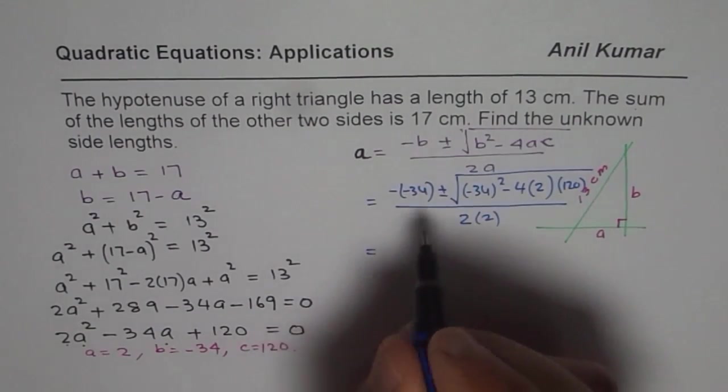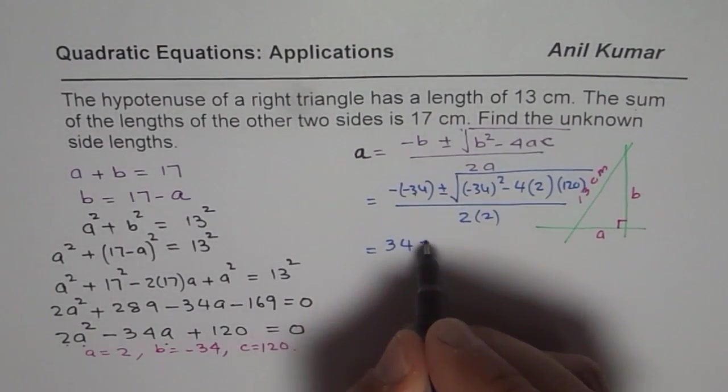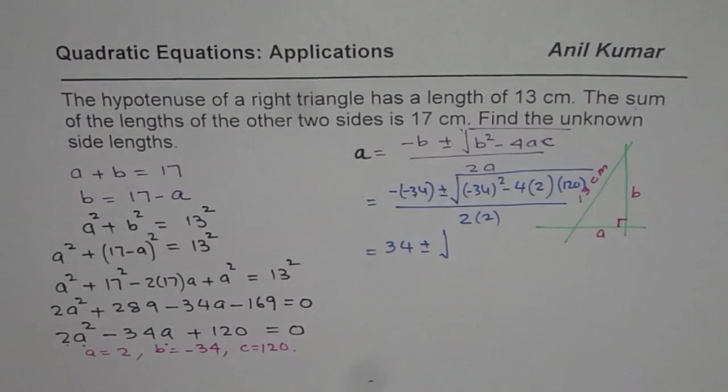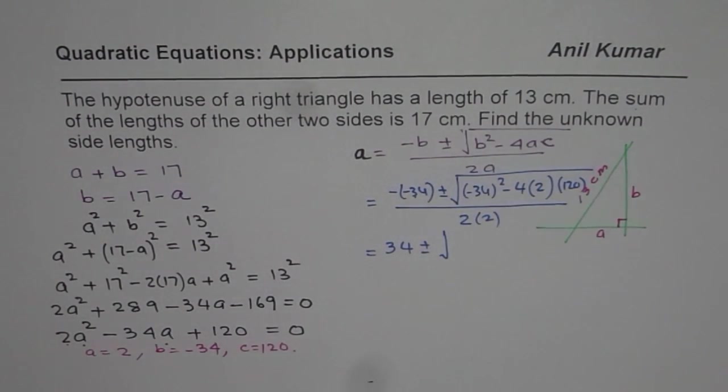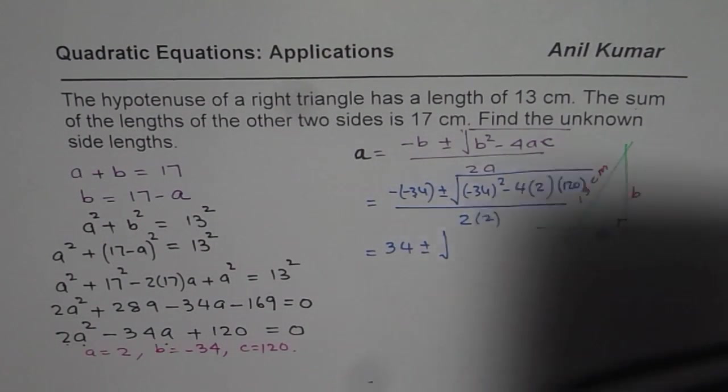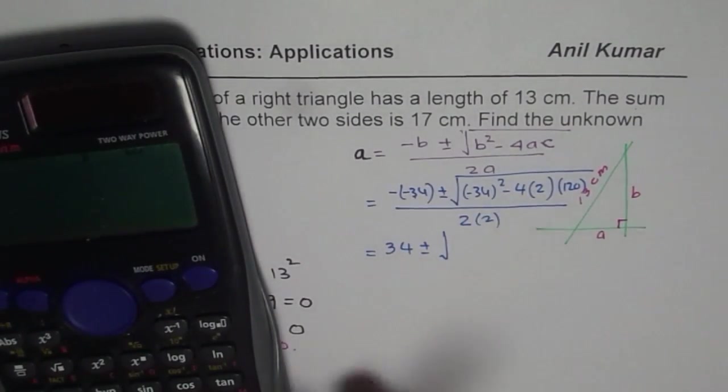So what do we get? Minus minus becomes plus. So we have 34 plus minus square root of.